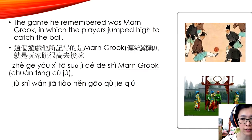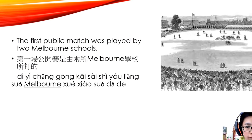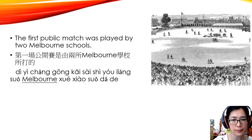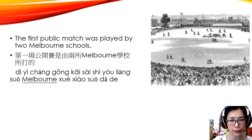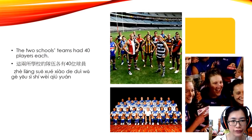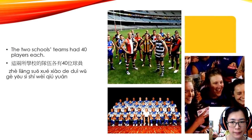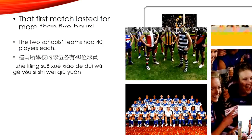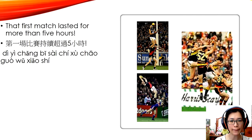如图所示，人们可以用脚踢球，然后可以用手接球，要跳得很高。 The first public match was played by two Melbourne schools. 第一场公开赛是由两所 Melbourne 学校所打的。 The two school teams had 40 players each. 这两所学校的队伍各有40位球员。 The first match lasted for more than five hours. 第一场比赛持续超过五小时。